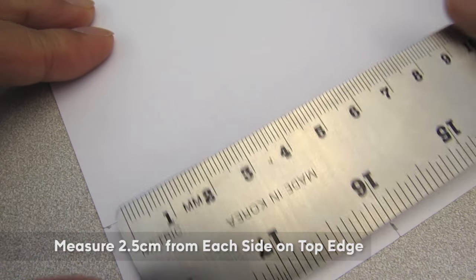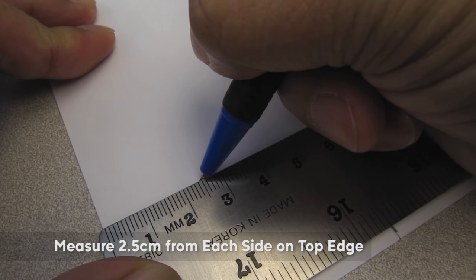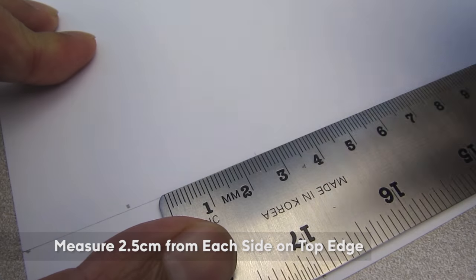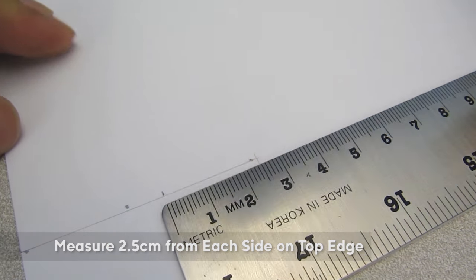On one of the longest lines, place a mark at 2.5cm from the left edge. Then make a mark at 2.5cm from the right edge. This leaves about 1cm in the center.